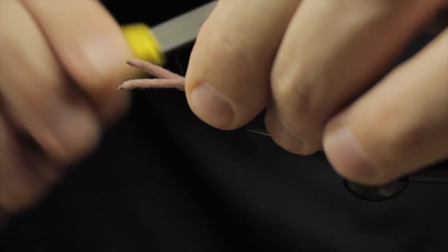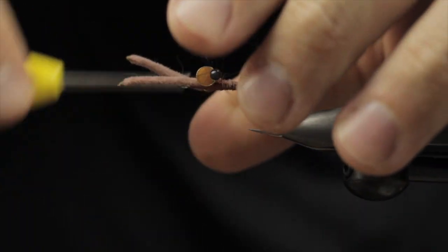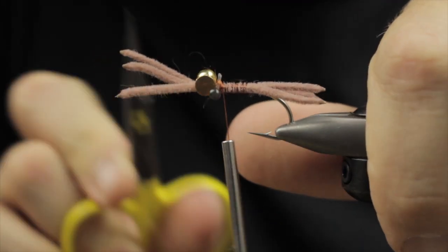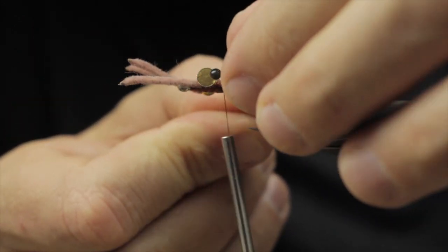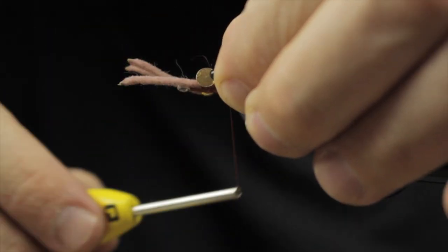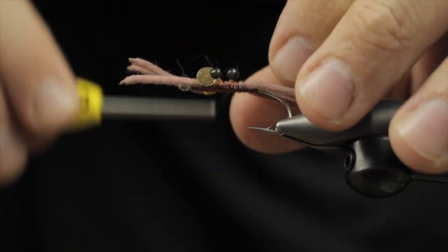Next up are some mono eyes and these are actually made with some 40 pound mason hard mono and UV resin with tungsten powder. So even the eyes are adding some weight to help keel this fly in a heavy current situation. This helps to keep the fly riding properly and down where you want it so the fish will eat it.